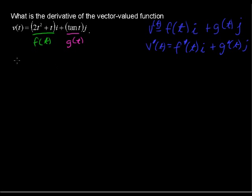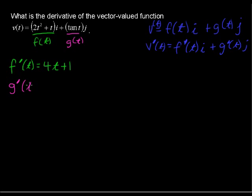So let's do that. If f of t is 2t squared plus t, then f prime of t equals 4t plus 1. We've just taken the derivative of what's in green. And then in purple, I'll take the derivative of the tangent function, which is secant squared, so I'll say secant squared of t.